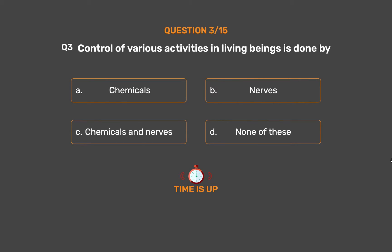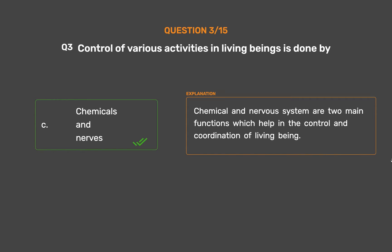The correct answer is Option C, Chemicals and Nerves. The chemical and nervous systems are the two main systems which help in the control and coordination of living beings.